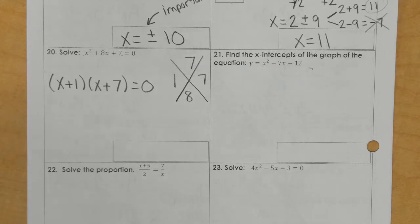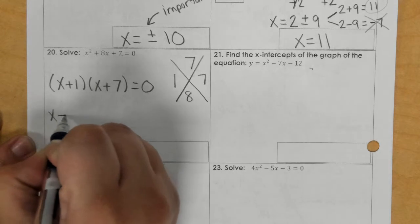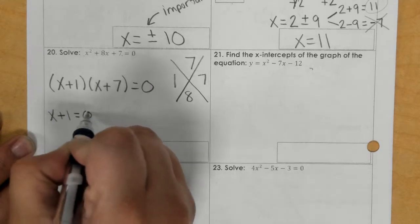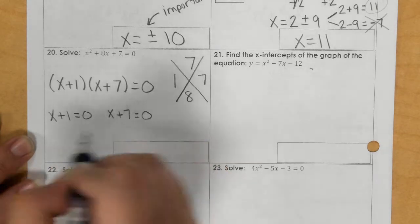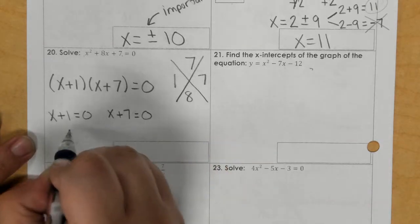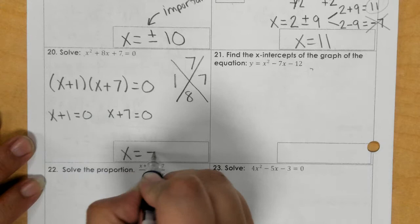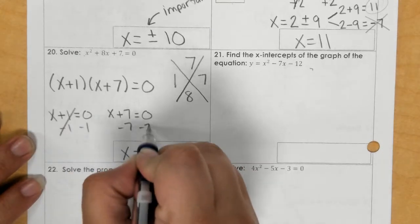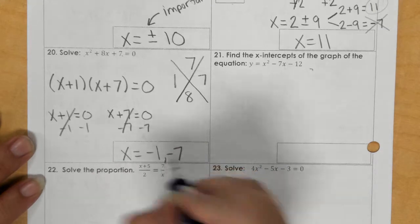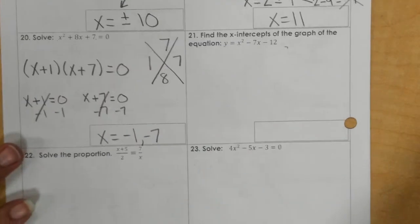Then I would write it in factored form. Once you have it equal to 0, you just set each expression equal to 0. So this would be subtract 1, x would be negative 1. Here, if I subtract 7, you would have negative 7.